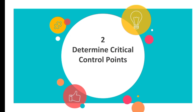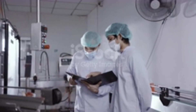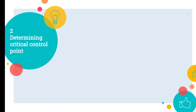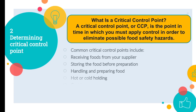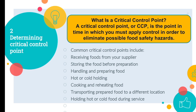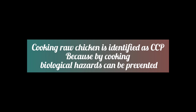The second principle is Determine Critical Control Points. Once you have analyzed potential hazards, it is important to identify where contamination can occur, and find specific steps in the process where you can prevent, remove, or reduce the hazards to a safe level. A Critical Control Point is the point in time at which you must apply control in order to eliminate possible food safety hazards. Common critical points include receiving food from your supplier, storing food before preparation, handling and preparing food, cooking and reheating food, and holding hot and cold food during service. For example, cooking raw chicken breast is the only step where bacteria can be eliminated, so it is identified as a CCP.